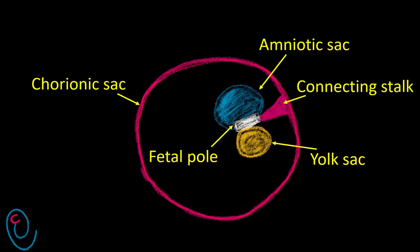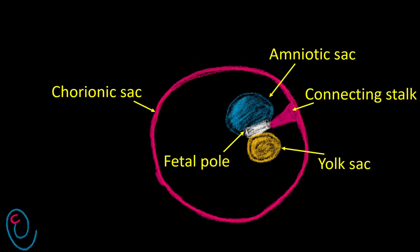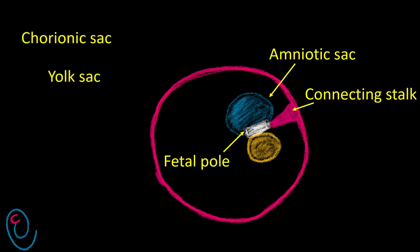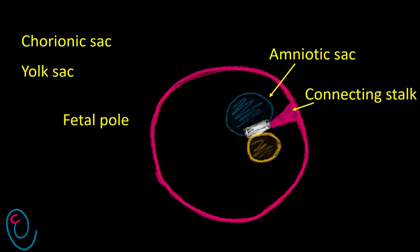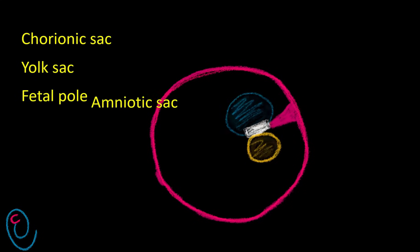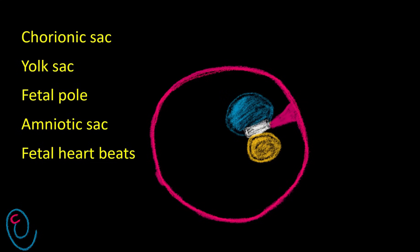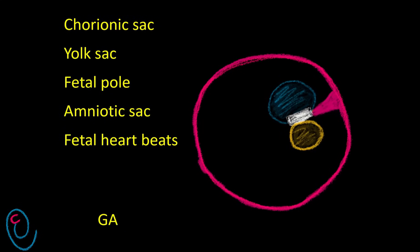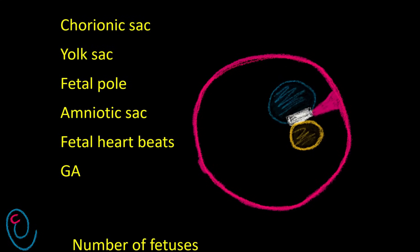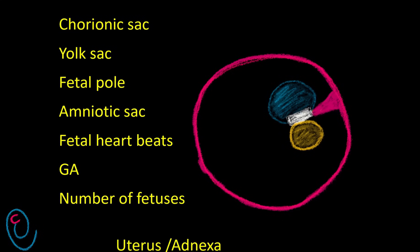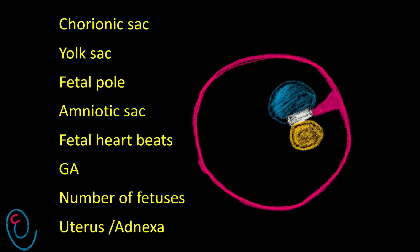During early pregnancy ultrasound, look for the chorionic sac, yolk sac, fetal pole, and you may also visualize the amniotic sac. Once the fetal pole is visualized, look for fetal heartbeats, determine gestational age, identify the number of fetuses, and finally examine the uterus and adnexa.